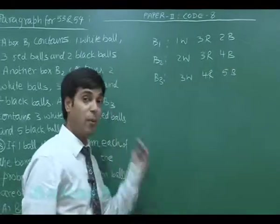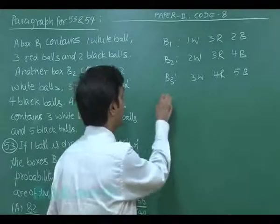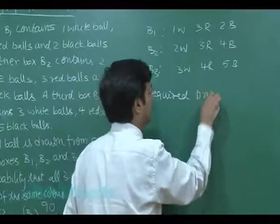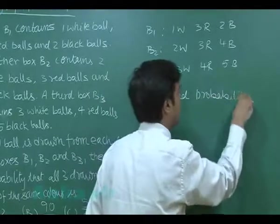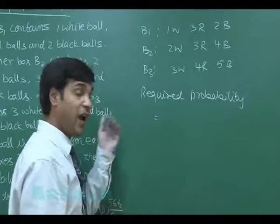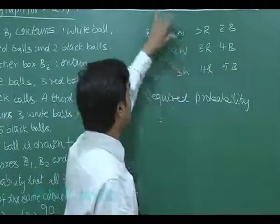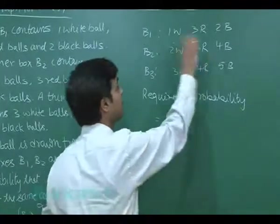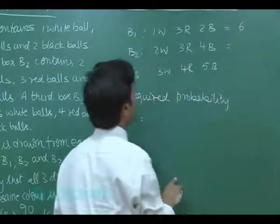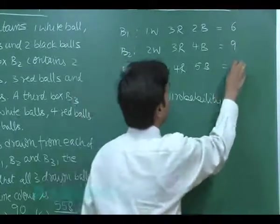Now, the required probability is equal to all three are white, all three are black or all three are red. All three are white means white from the first box. Total number of balls in box 1 is 6, box 2 is 9, box 3 is 12.